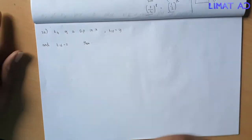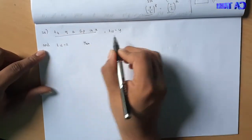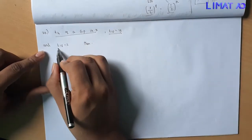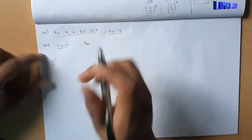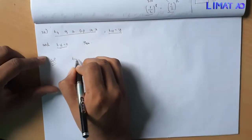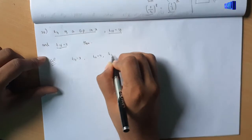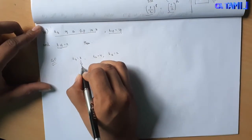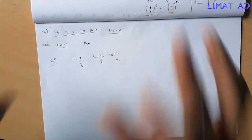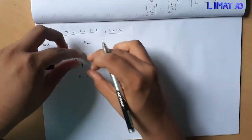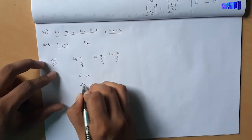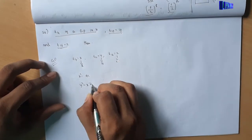Sum number 20: The 4th term of a GP is x, the 10th term is y, and the 16th term is z. Using GP properties, the 4th, 10th, and 16th terms form a GP themselves, where the 10th term is the geometric mean. Therefore y squared equals x into z. That is the final answer.